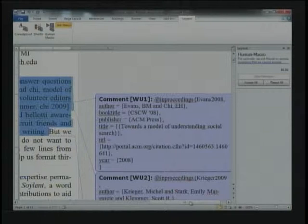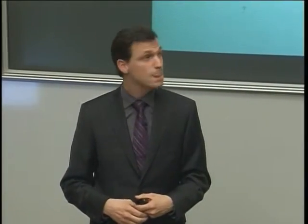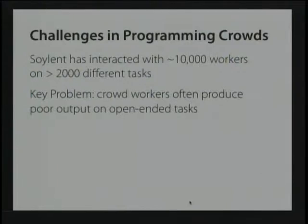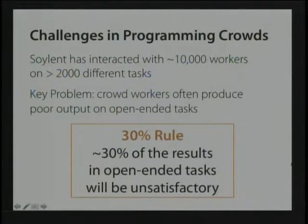That in short is Soylent. The goal is to take crowds and use them to augment what's possible with interactive systems. Now, if you wanted to build something like Soylent, the naive way will not work. When you're talking about open-ended tasks — where there's no multiple-choice answer or easily-checkable ground truth — crowds actually tend to produce pretty poor work. We have a rule of thumb called the 30% rule: about 30% of what you get back is going to be unsatisfactory. That's too poor to embed within a software system.